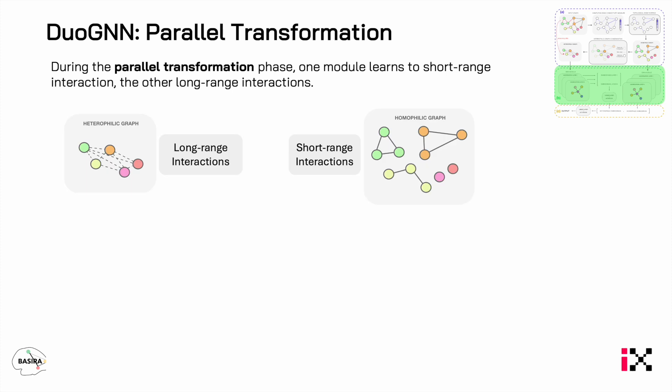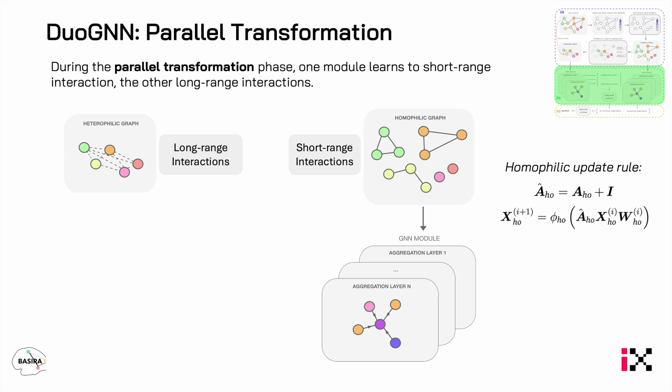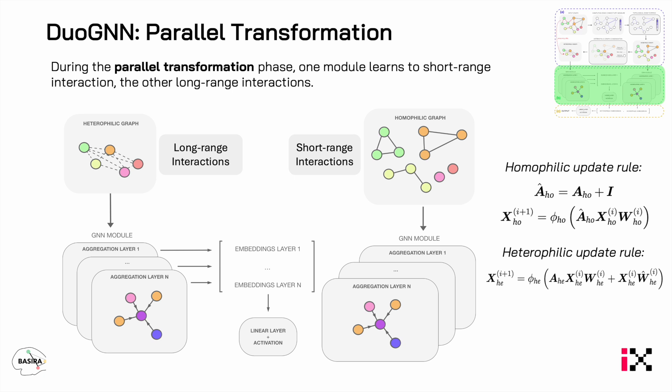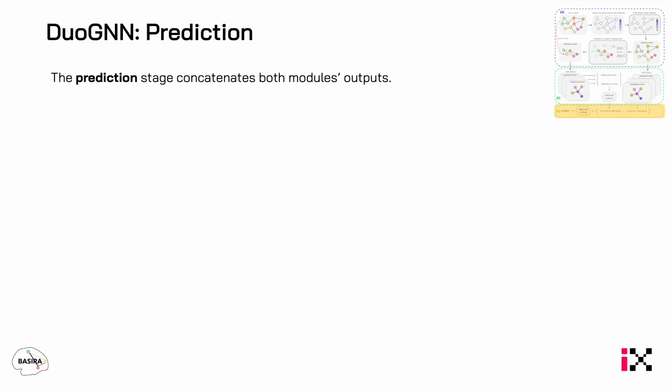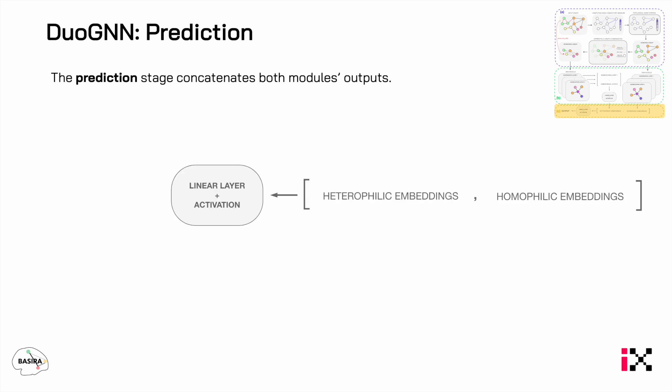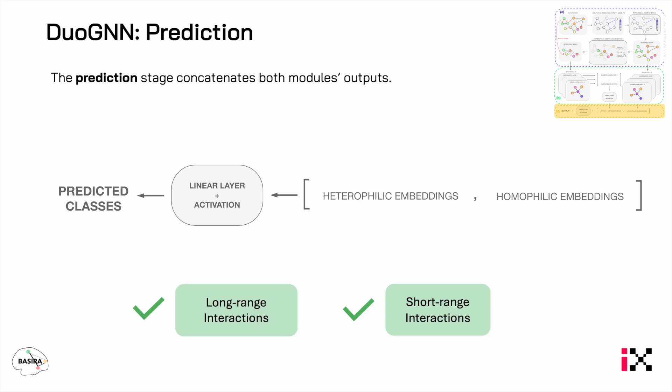The dual transformation stage processes both graphs in parallel. The homophilic graph is processed by a standard GNN module, while the heterophilic graph is processed by a variation of this which does not only consider the output of the last aggregation, but the aggregation at every layer. A more detailed explanation of the math can be found in the paper. In the prediction stage, we concatenate both outputs and process them through a linear layer to get the predictions, ensuring the model considers both short and long-range interactions.